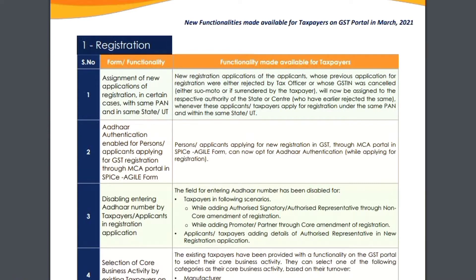It says that if an applicant is cancelled or rejected by the tax officer, or whose GSTIN was cancelled by any reason by the same authority of the same state or central jurisdiction, those persons can apply for registration again with the same PAN and within the same state and union territory.